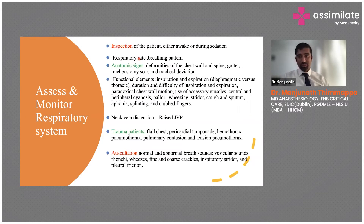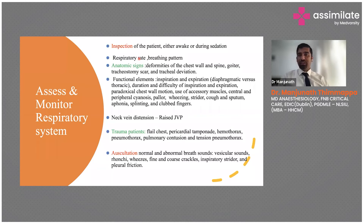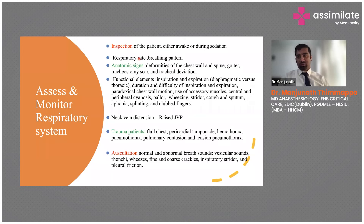For trauma patients, look at functional elements — inspiration and expiration, diaphragmatic versus thoracic breathing. Check for paradoxical chest wall motion, which can be seen in post-CABG patients or those with collection inside the chest. Note use of accessory muscles and central versus peripheral cyanosis. Central cyanosis is assessed at the tongue; peripheral cyanosis at the extremities, hands, and feet. Also look for pallor, wheezing, and stridor.